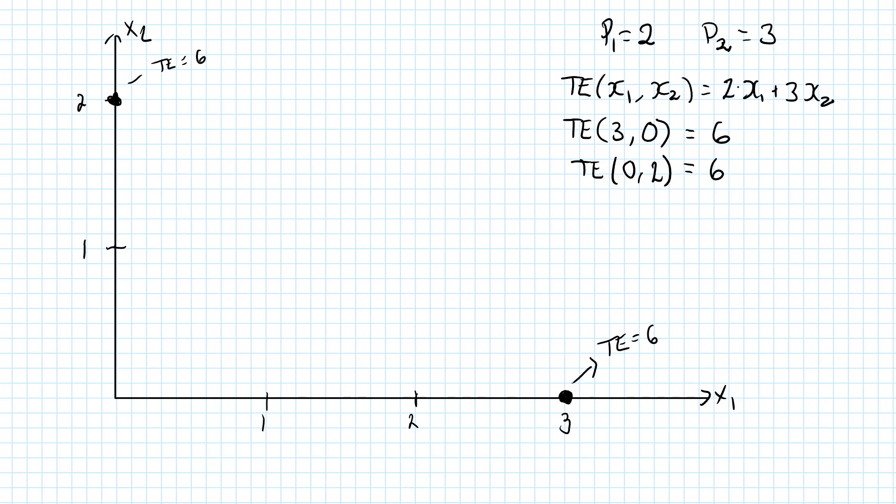Since the total expenditure function is linear in X1 and X2, every bundle on a straight line between these two points will have a total expenditure of 6.